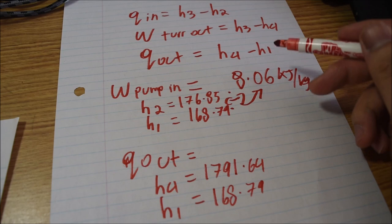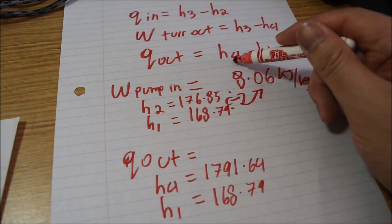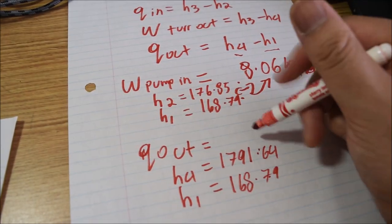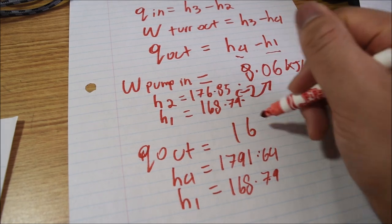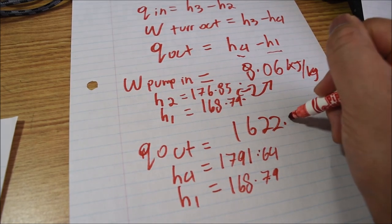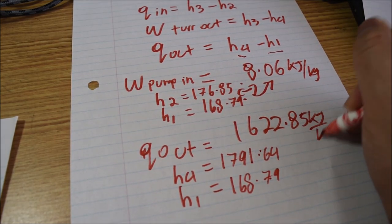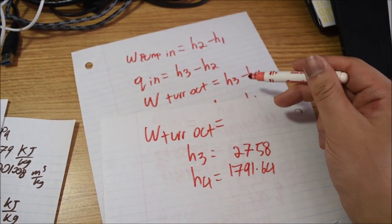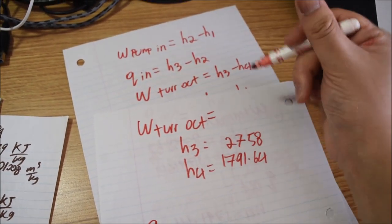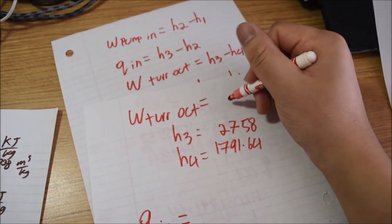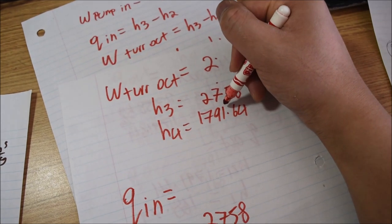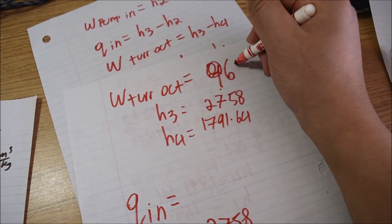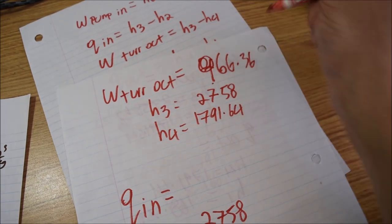For Q out, we can see the formula: H4 minus H1. So H4 minus H1 gives us the Q out value. The work of the turbine out formula allows us to solve the work by combining the relevant enthalpy values, which gives us the turbine work output.